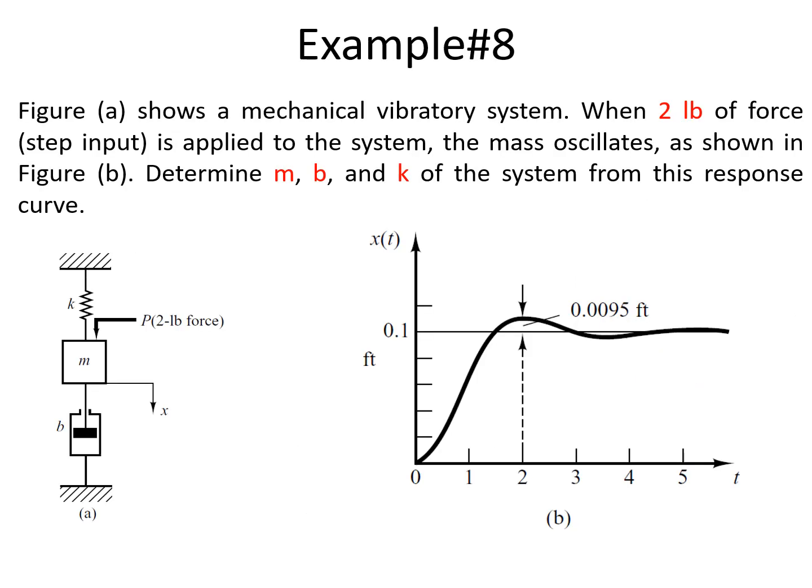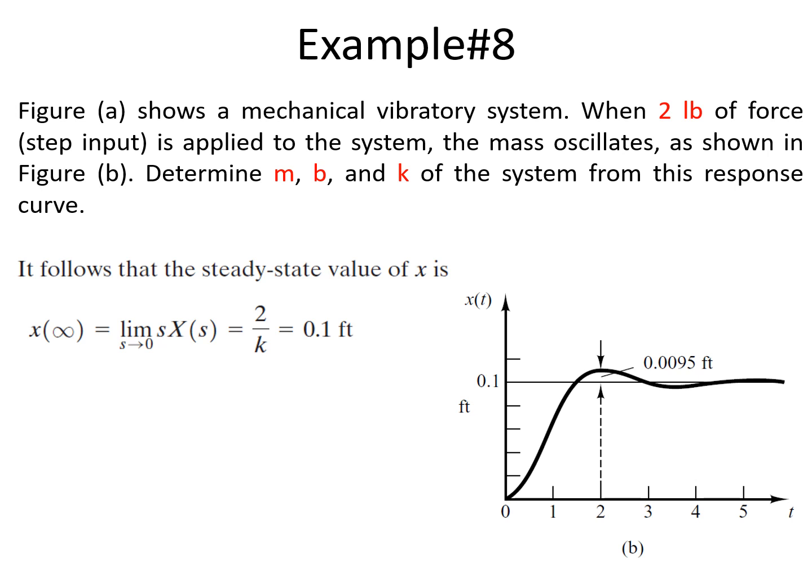This is another example where a mechanical system is given along with its response curve, and we need to determine the values of m, b, and k. Using the final value theorem, x(∞) = limit s→0 of s * X(s). With the given steady state value, we get x(∞) = 2/k = 0.1 feet. This is a practical example where we use steady state error values to evaluate actual parameter values such as mass, spring constant, and dashpot coefficient.